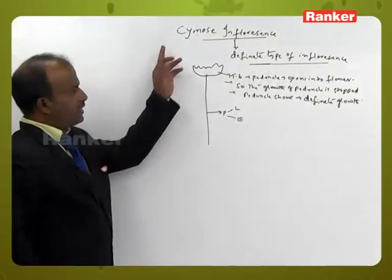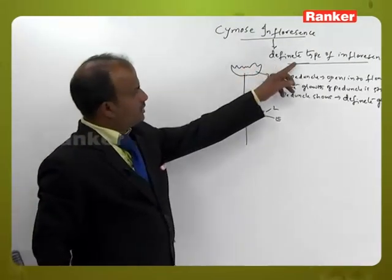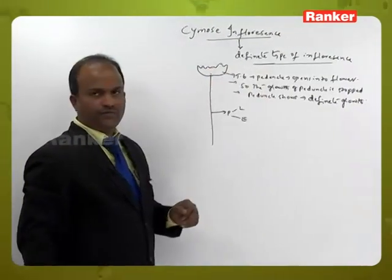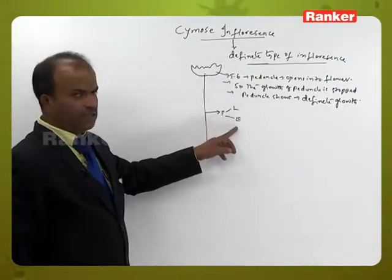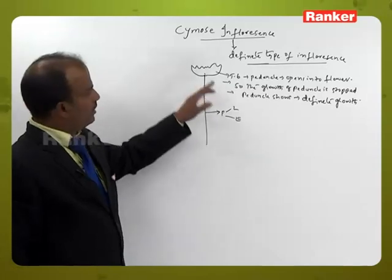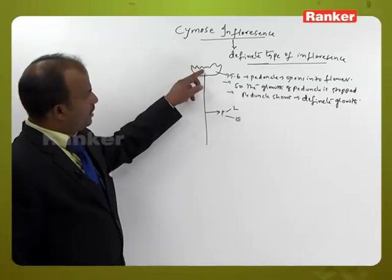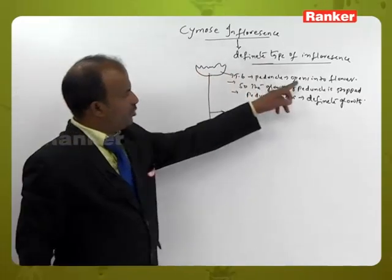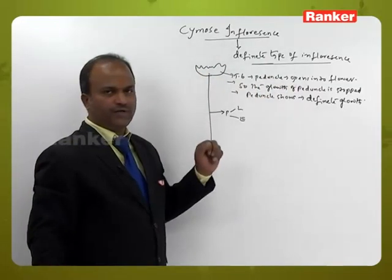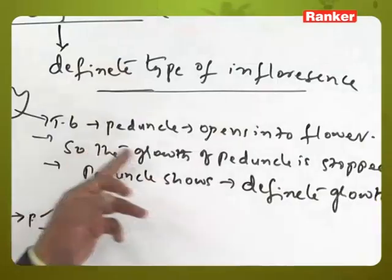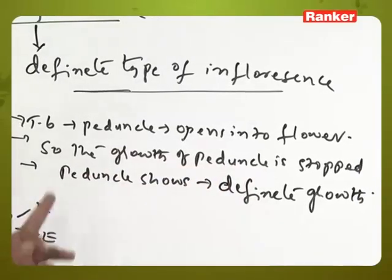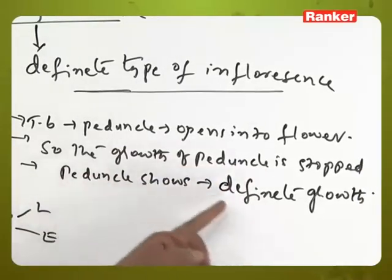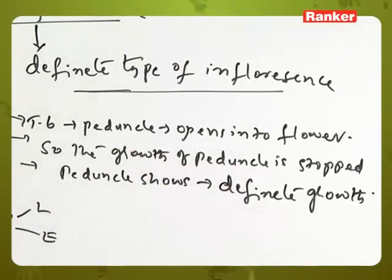In Cymose inflorescence, also called as definite type of inflorescence, the peduncle is long elongated. The terminal bud of the peduncle opens into flower, so the growth of the peduncle is stopped and the peduncle shows definite growth.